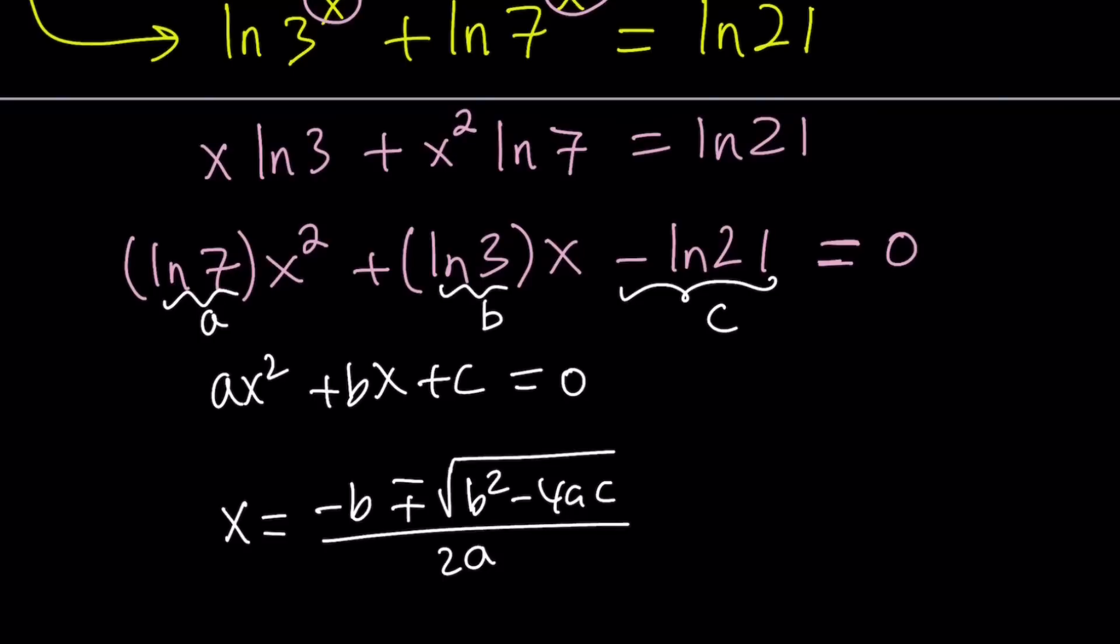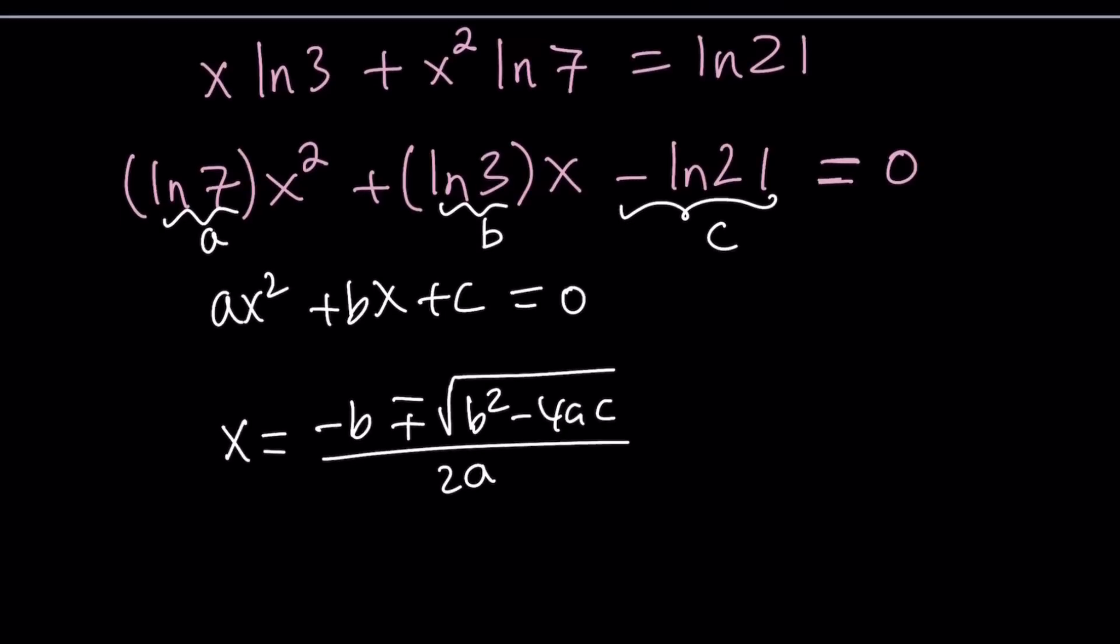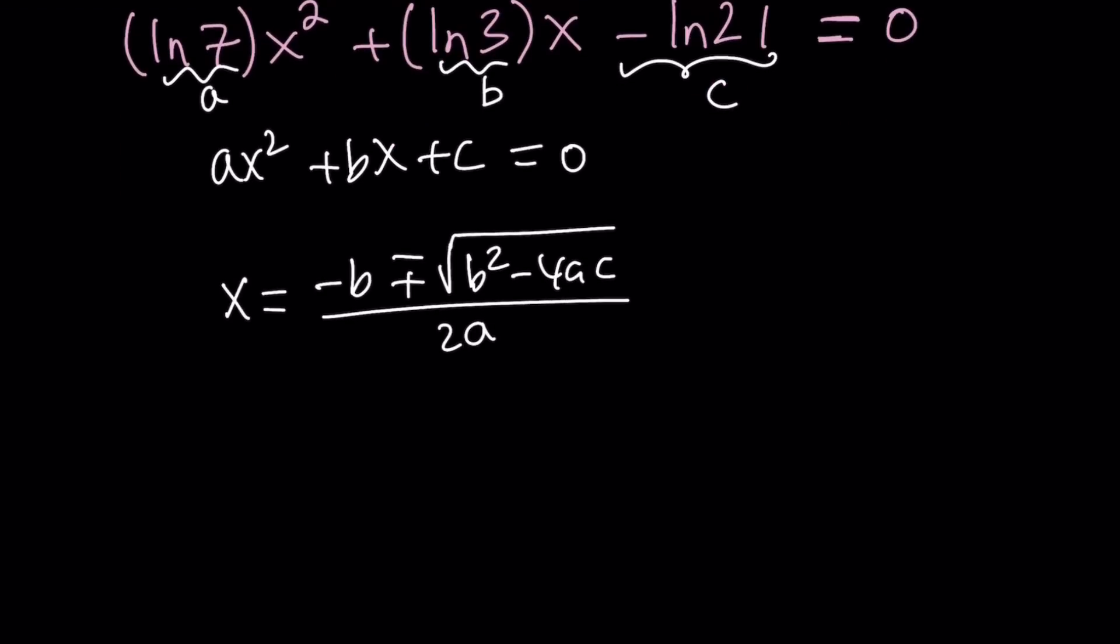Okay. So B squared minus 4AC plays an important role in this equation. And it's called the discriminant because it kind of discriminates between the types of solutions. So we call it delta. Delta, so delta equals B squared minus 4AC. And this actually gives us a more compact version of the quadratic formula, which a lot of people use to memorize. Negative B plus minus the square root of delta divided by 2A. That looks like a triangle, but it's actually the Greek letter delta, the uppercase delta.